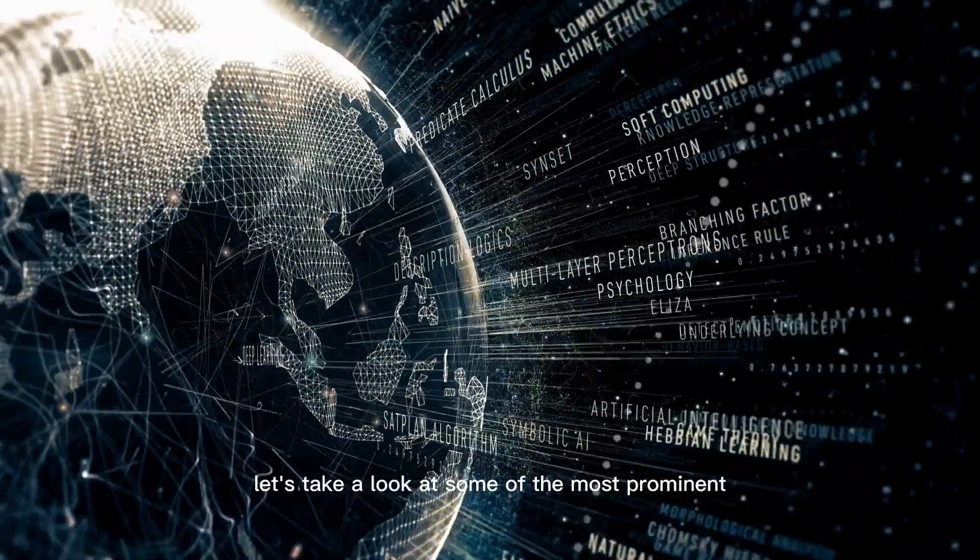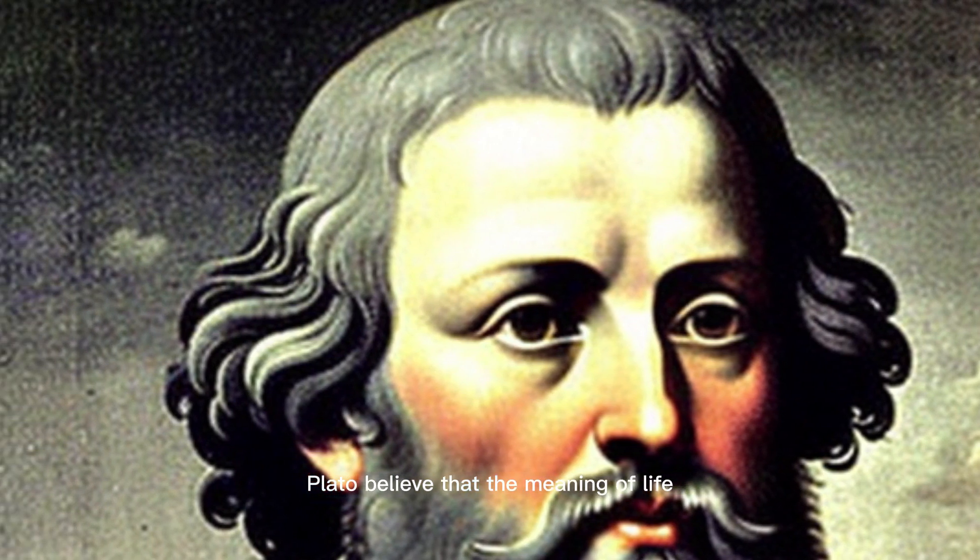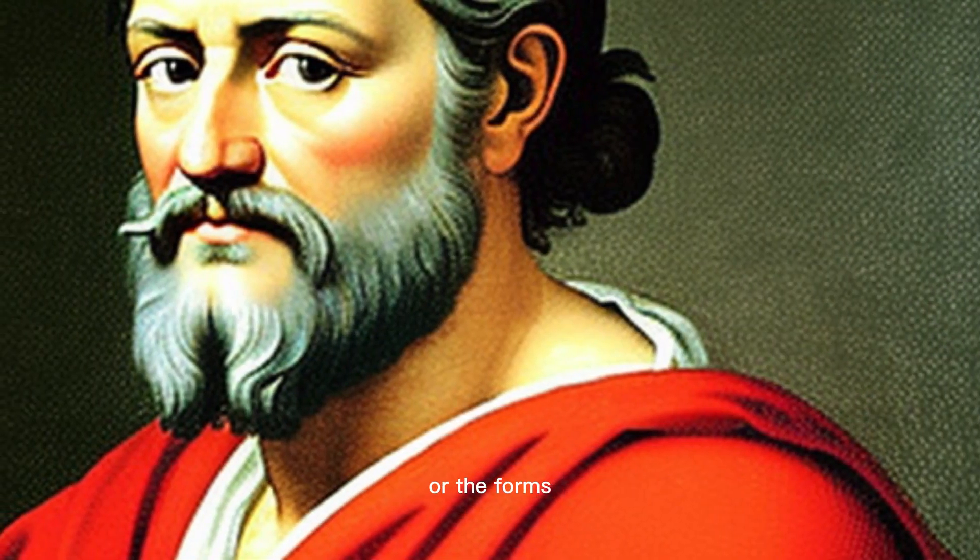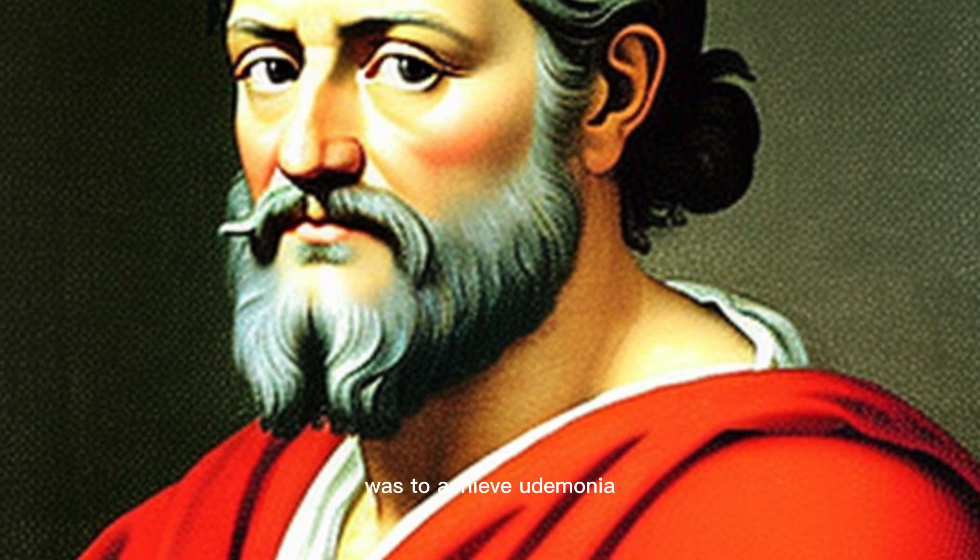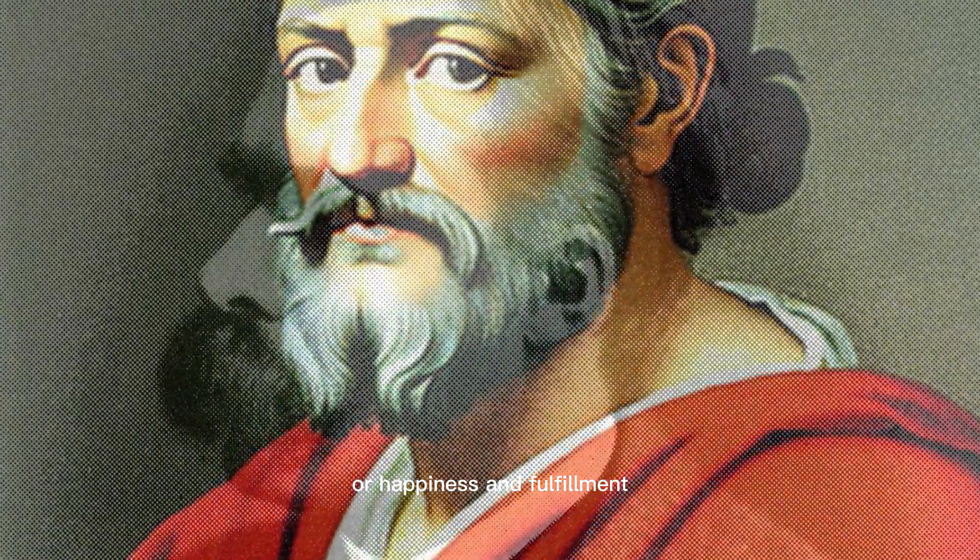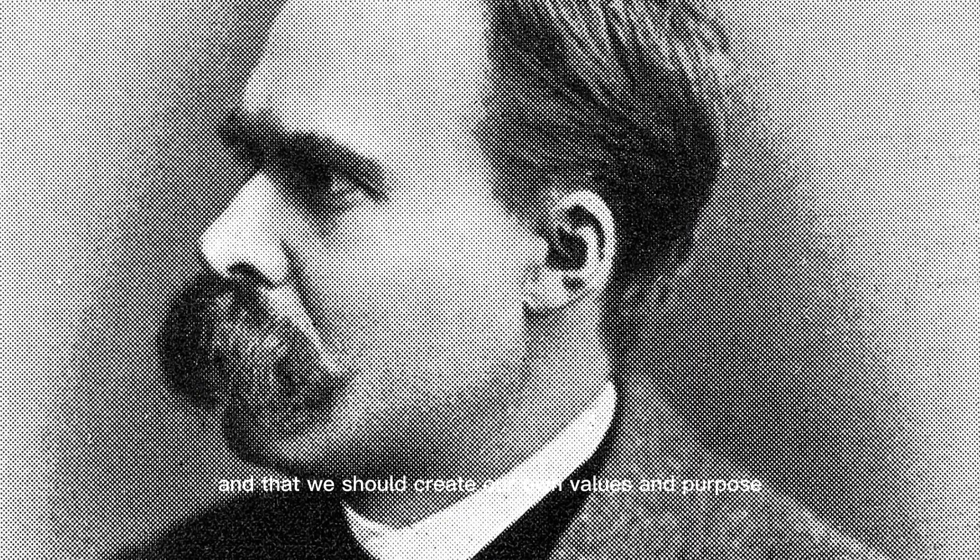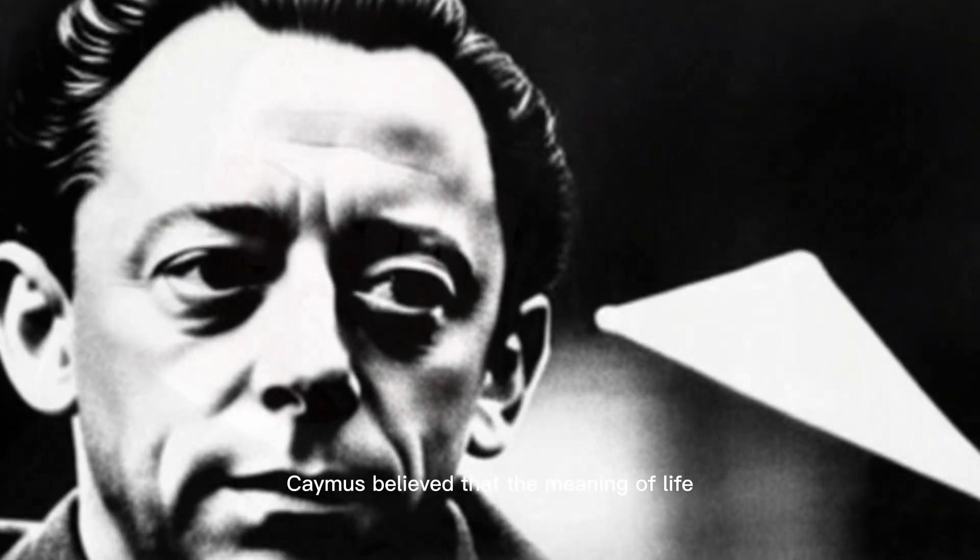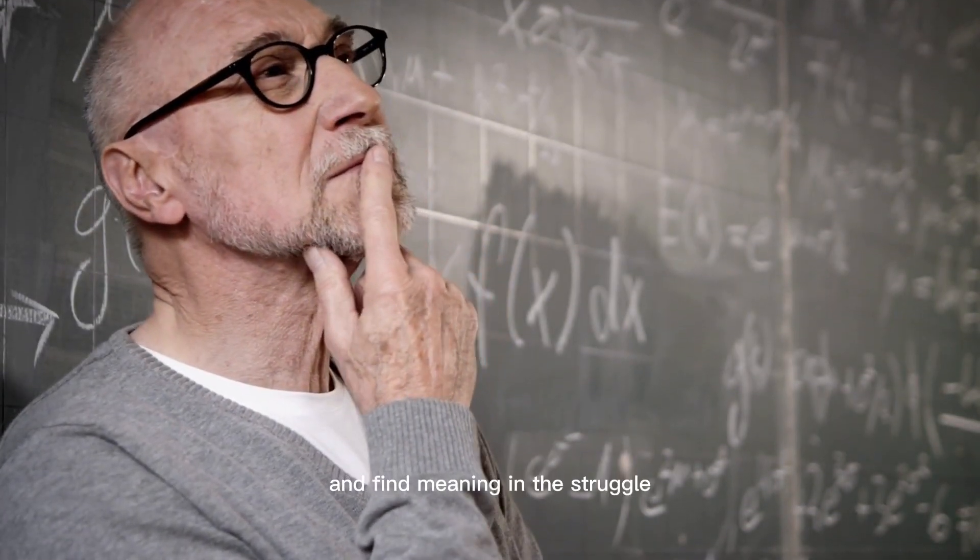Let's look at some prominent philosophical views on the meaning of life. Plato believed that the meaning of life was to achieve knowledge of the ultimate reality or the forms. Aristotle believed that the purpose of life was to achieve eudaimonia, or happiness and fulfillment. Nietzsche believed that life had no inherent meaning, and that we should create our own values and purpose. Camus believed that the meaning of life was to confront the absurdity of existence and find meaning in the struggle.